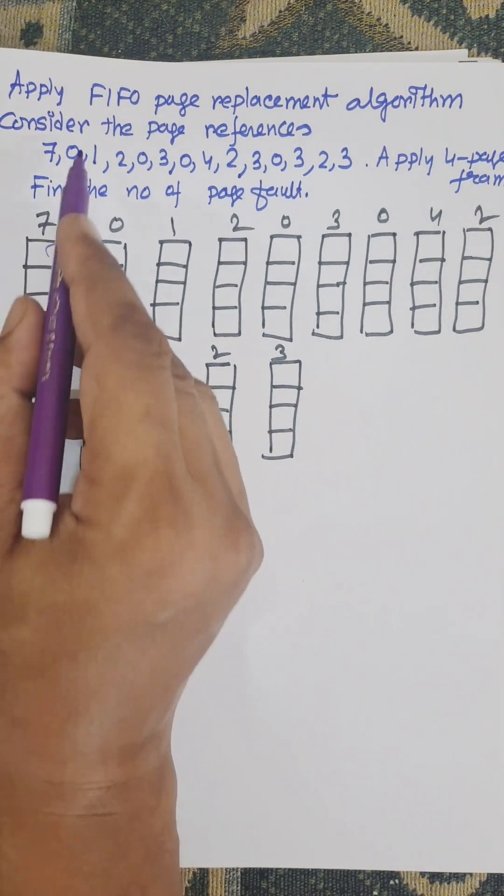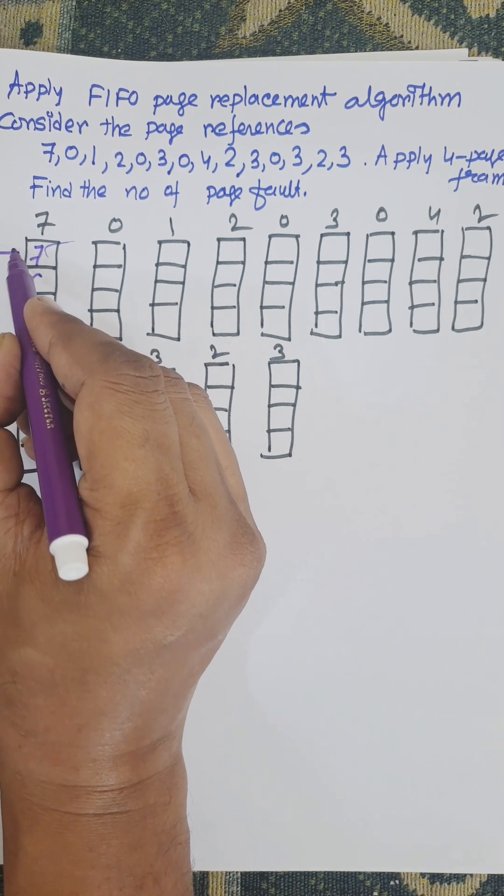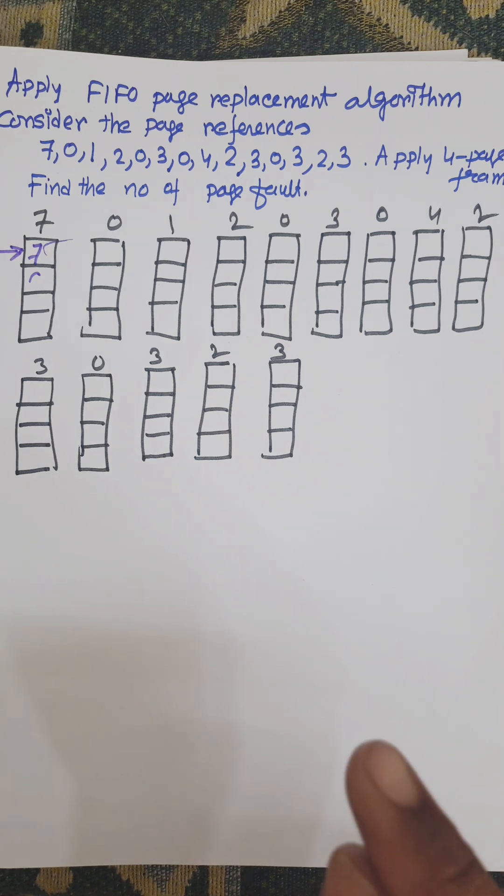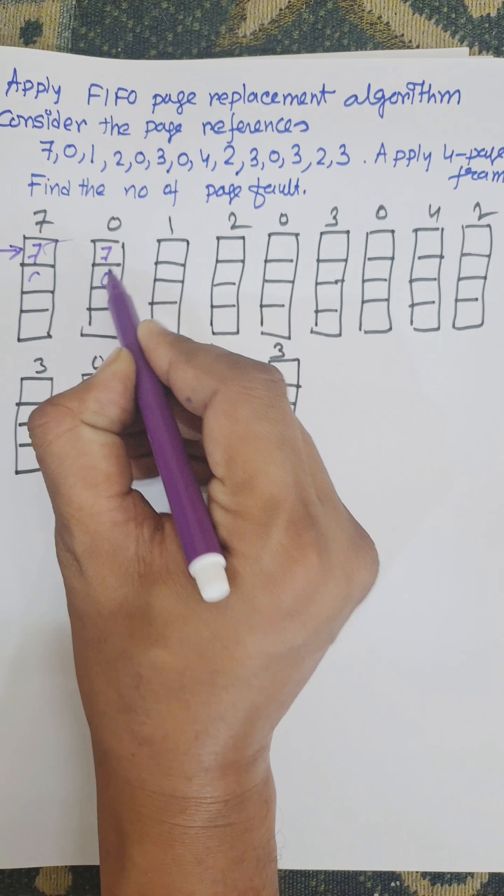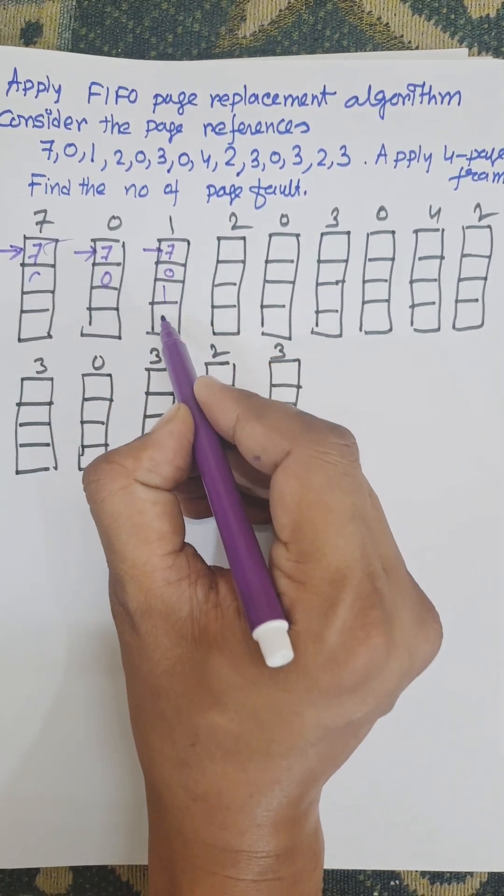So first of all, 7 is inserted here. That is first, meaning 7 is the first number which is inserted in the page frame memory. Next one is 0. 7 remains in the same position. Next 7, 0, 1, 2.